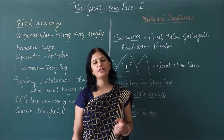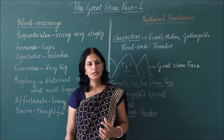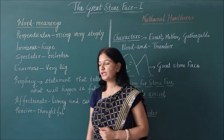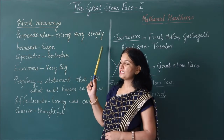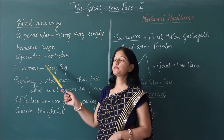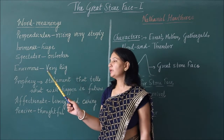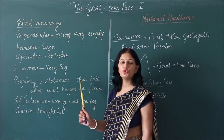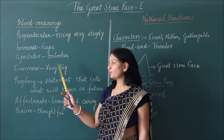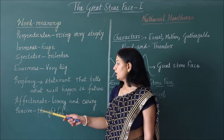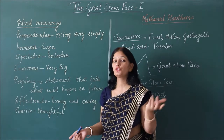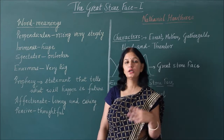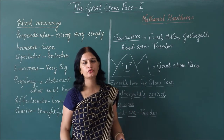In Great Stone Face Part 1, that was the story. Let's have a small recap of the lesson, starting with word meanings. Perpendicular — rising very steeply. Immense — huge. Spectator — onlooker. Enormous — very big. Prophecy — a statement that tells what will happen in future, and this lesson revolves around this old prophecy. Affectionate — loving and caring; Ernest was very affectionate. Pensive — thoughtful; Ernest was also a thoughtful child.